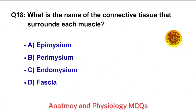Question No. 18. What is the name of the connective tissue that surrounds each muscle? The right answer is option A: Epimysium.